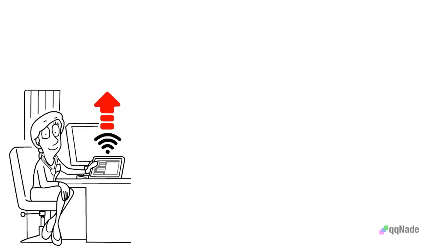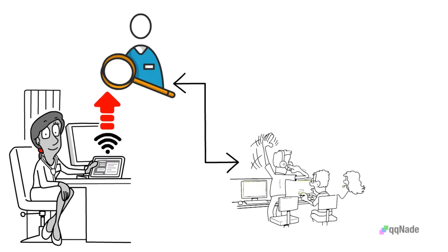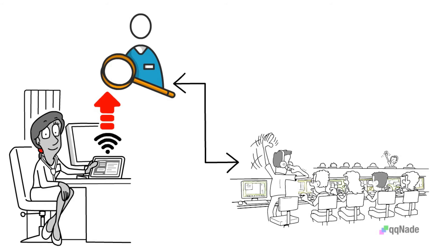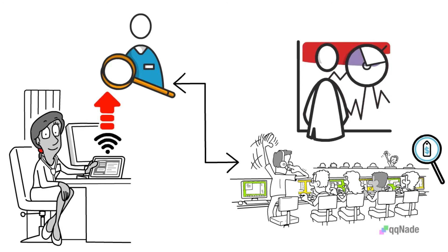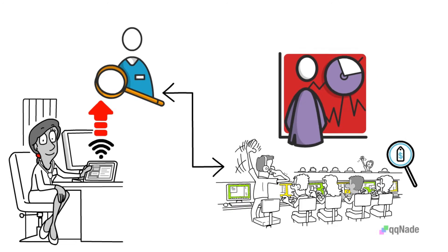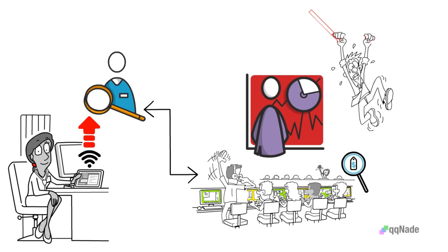Another benefit is that you can remain anonymous while using dApps. These days, there is a lot of concern with how applications use and store user information. A lot of people are worried that the apps they use collect their information and use it to target ads at them, or worse, sell the information to the highest bidder. With dApps, you rarely need to submit any personal information. This is great for people who are looking for social communities without putting their personal information at risk.